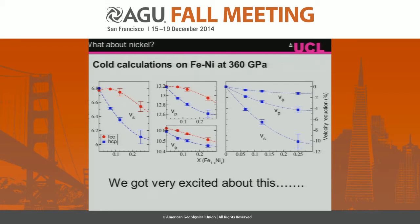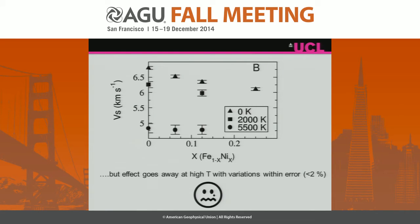We then looked at nickel. At zero Kelvin, the shear wave velocity went down dramatically with nickel content — we were very pleased. But when we did the high temperature calculation, that effect went away completely. There's essentially no difference in shear wave velocity with nickel content within error. So nickel is essentially transparent.